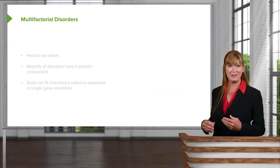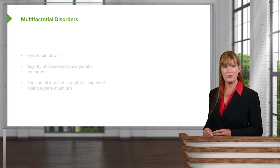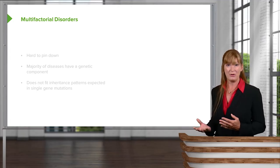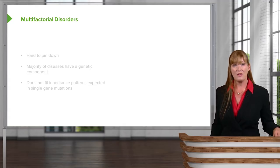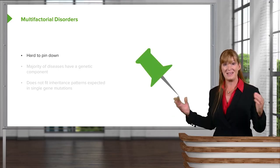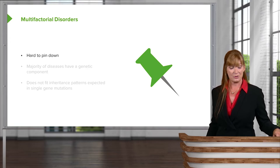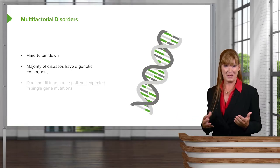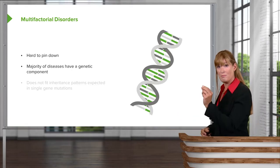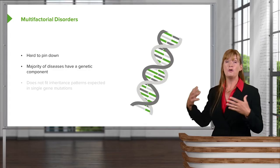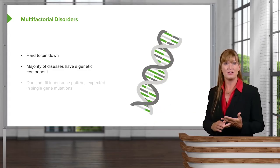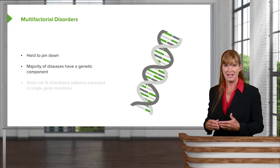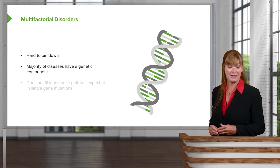Finally, we'll spend a lot of time looking at multifactorial disorders. As I mentioned, the bulk of genetic disorders are multifactorial. They're really hard to pin down because so many things come in to impact them. The majority have a genetic component, of course, but that component might be very small. There may be many other things impacting it — like the environment the person grew up in, their family situation, and the epigenetic impacts they've experienced during their life.